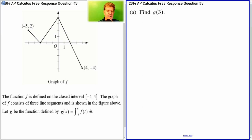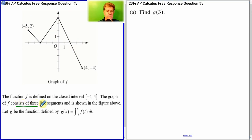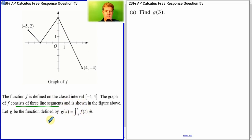So we're going to look at derivatives and integrals with graphs. Here is 2014's question. I have this graph — it's some line segments, three line segments. Always make sure you read the description. It's defined on the closed interval, three line segments in the figure above. G is the integral from negative three to x.